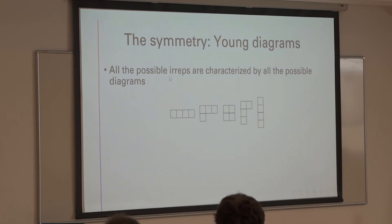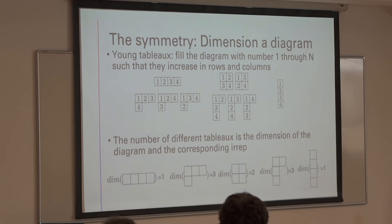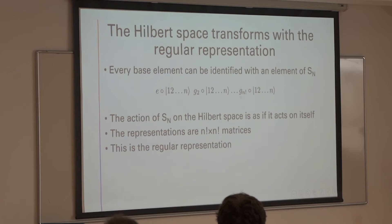All possible irreducible representations of S_N are characterized by a Young diagram, so there is a one-to-one correspondence. To find the dimension of the corresponding irreducible representation we use a Young tableau. A Young tableau is the filling of a Young diagram with numbers 1 to N such that they increase in columns and in rows. The number of Young tableaux for a given diagram is the dimension of that representation — for example, the dimension of this one is 1, the dimension of this one is 3, etc.